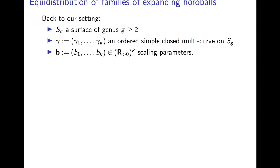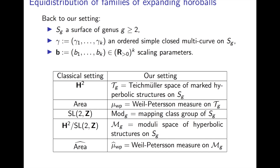Let's go back to our original setting: a surface of genus g ≥ 2, an ordered simple closed multi-curve on the surface, and the scaling parameters B that we were considering in our counting. I want to do a translation between the original setting and this new setting, to motivate the definitions that are going to come. H² is now going to become the Teichmüller space of marked hyperbolic structures on my surface. The area is going to become the Weil-Petersson measure on Teichmüller space. The SL₂(ℤ) action is now going to be the action of the mapping class group, and H² mod SL₂(ℤ) becomes the moduli space of hyperbolic structures — Teichmüller space modulo the mapping class group.